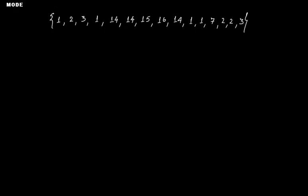First, let's learn how we calculate mode. Suppose we have this data set with some values: 1, 2, 3, 1, 14, 14, 15, 16, 14, 1, 1, 7, 2, 2, 3. We are not going into detail about what these values represent — our focus is only on this data set. Now if someone asks you what the mode of this data set will be, you need to look at that particular number or value which is occurring the most number of times.